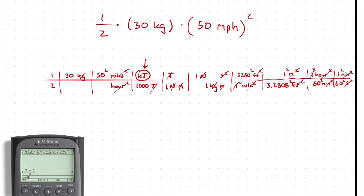If I take one half times 30 times 50 squared times 5,280 squared, divided by 1,000 times 3.2808 squared times 60 squared times 60 squared, I will get an answer in kilojoules.